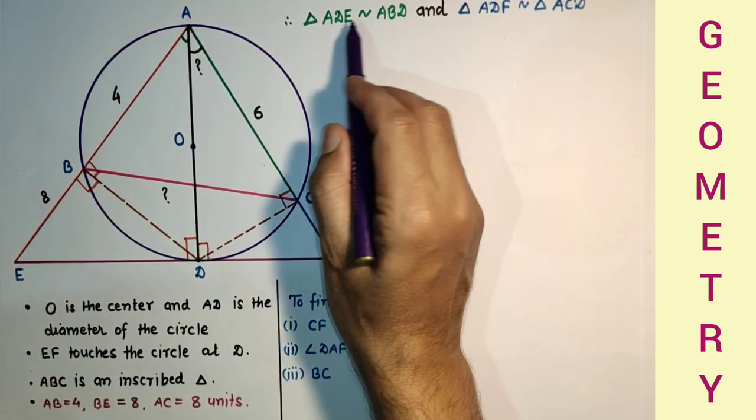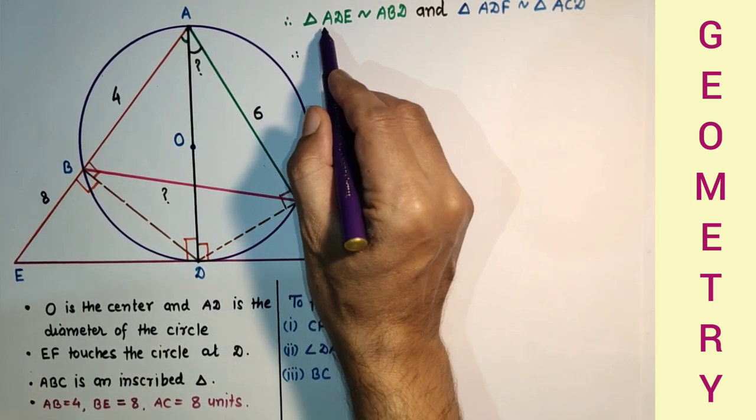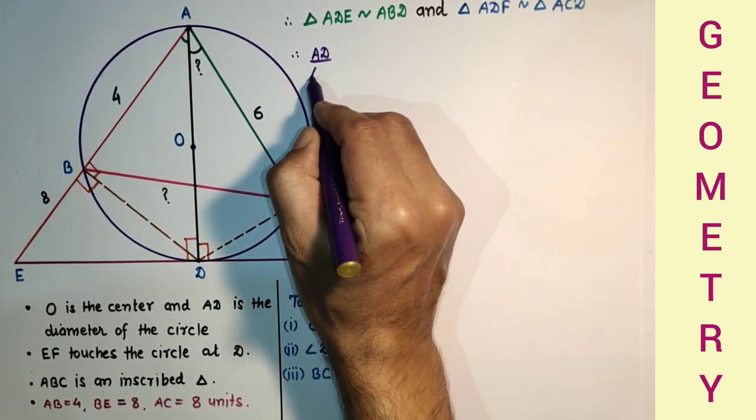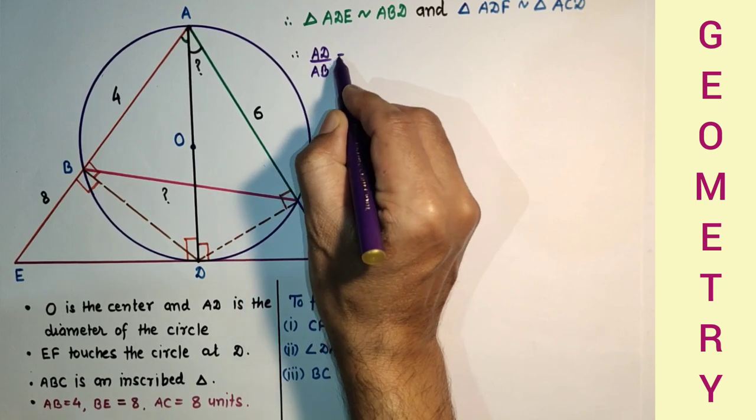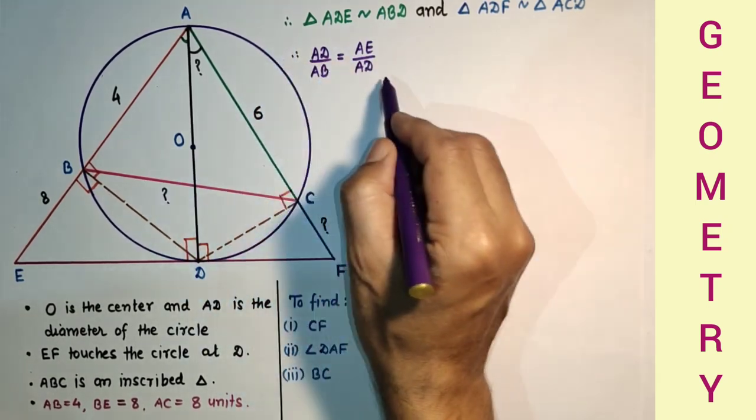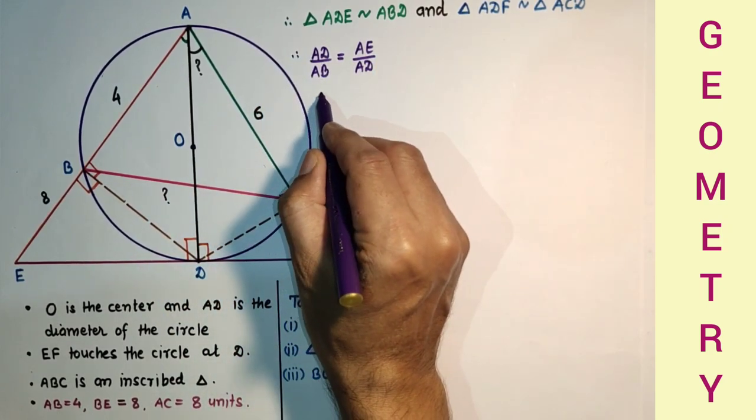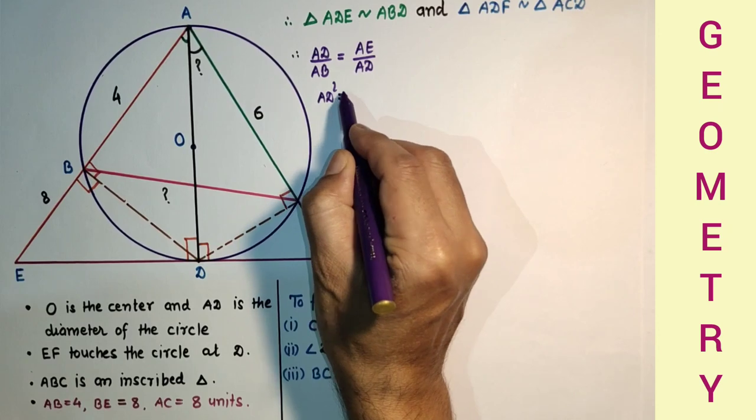Since corresponding sides of similar triangles are proportional, therefore AD upon AB is equal to AE upon AD. This will give us AD² = AB×AE. This is the first relation.